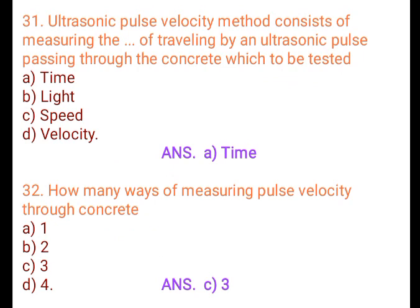Question 31: Ultrasonic pulse velocity method consists of measuring the time of travel of an ultrasonic pulse passing through the concrete which is to be tested. A. Time, B. Light, C. Speed, D. Velocity. Answer: A. Time.